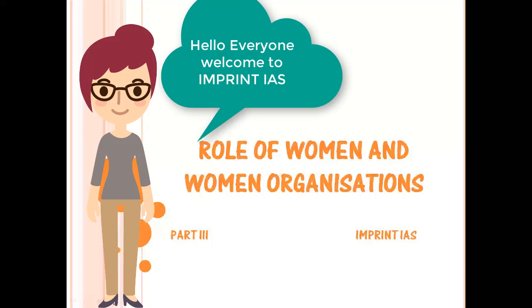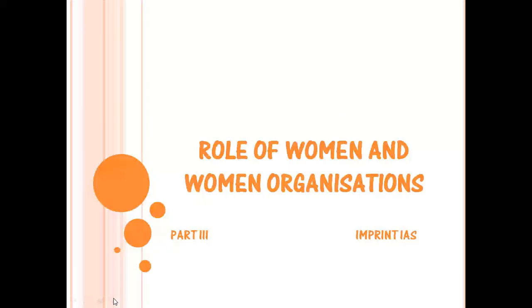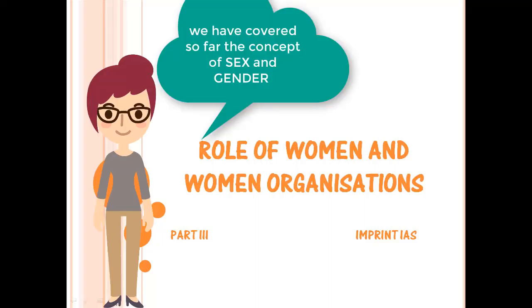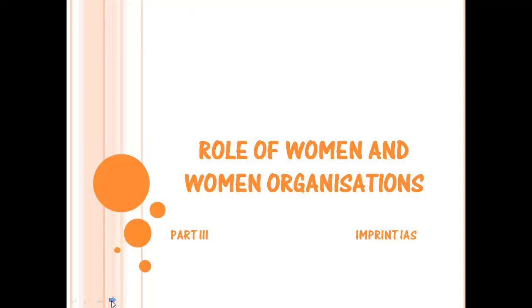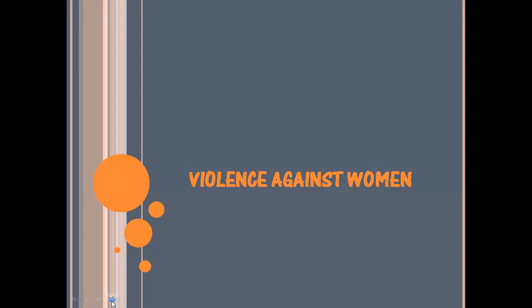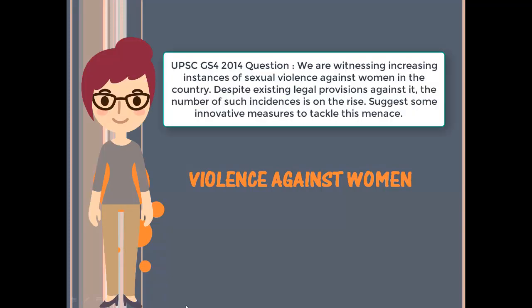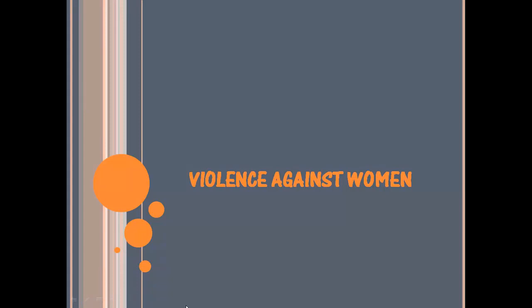Hello everyone, continuing with the Indian society series. We are discussing the basic terms before we take up the main topic about women's organization. We have covered so far the concept of sex and gender, patriarchy, and gender inequality. Today we'll be covering two basic terms: violence against women and sex ratio. These basic terms are very important because previous exam questions have been more about such basic terms rather than being direct questions about women's organization.